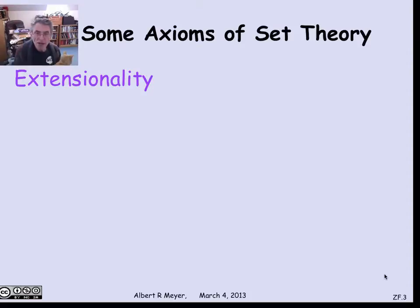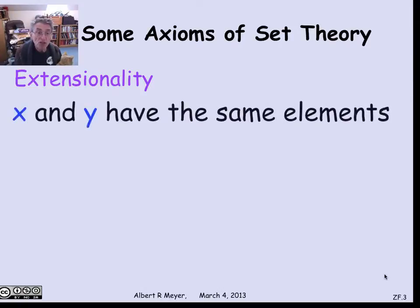One of the basic axioms of set theory is called extensionality, which is capturing the idea that a set is determined by its members. Let's consider the assertion that two sets, x and y, have the same elements.